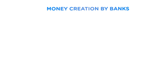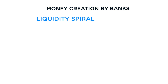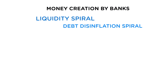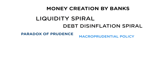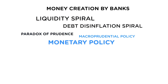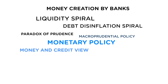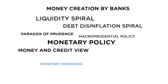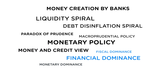In this video series, you will learn about money creation by banks, liquidity spirals and the debt disinflation spiral, as well as the paradox of prudence. You will study macro prudential policy and monetary policy, contrasting the money view with the credit view. You will become familiar with monetary dominance, fiscal dominance and financial dominance.